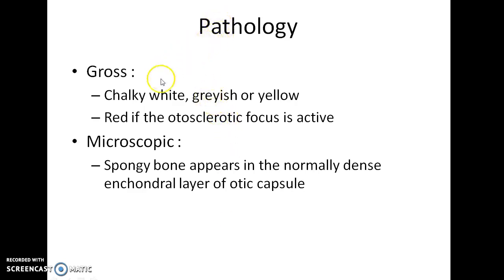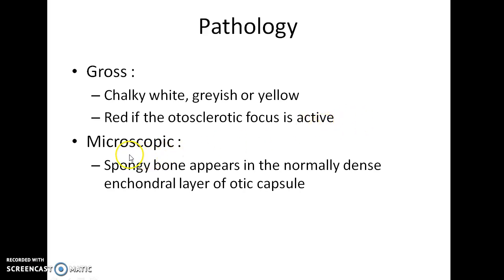What are the gross and microscopic features in Otosclerosis? Grossly, there will be a chalky white, grayish or yellow deposit. It will be red if the Otosclerosis focus is active and rapidly progressing. The microscopic features show spongy bone appearing in the normally dense endochondral layer of the otic capsule.